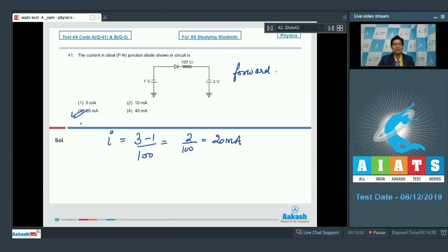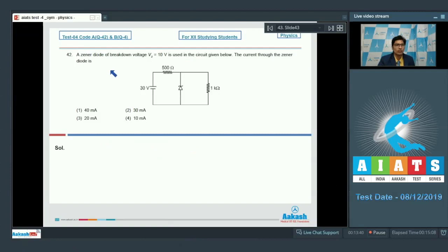Now let us proceed to question number 42. Question number 42 says a Zener diode of breakdown voltage VZ equal to 10 volt is used in the circuit given below. The current through the Zener diode is. Students, when the Zener diode exhibits conduction, the potential difference across it is the breakdown voltage, and hence a voltage of 30 volt minus breakdown voltage, that is 10 volt, which will be equal to 20 volt, will be acting across the 500 ohm resistor.